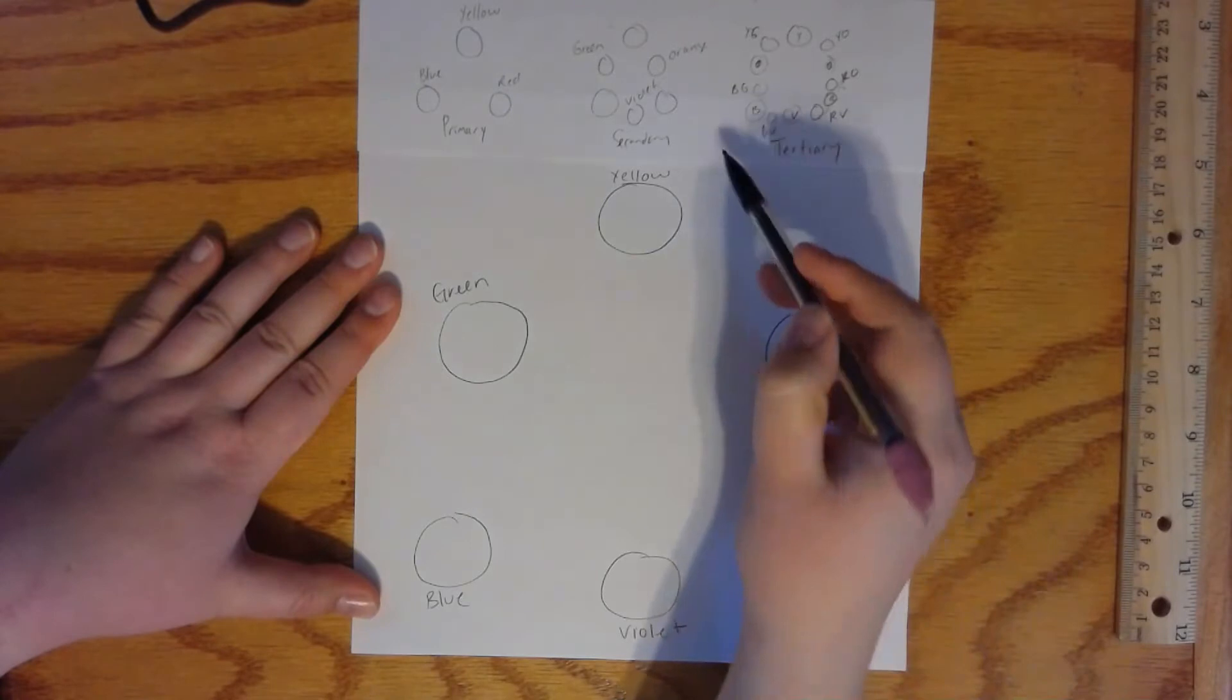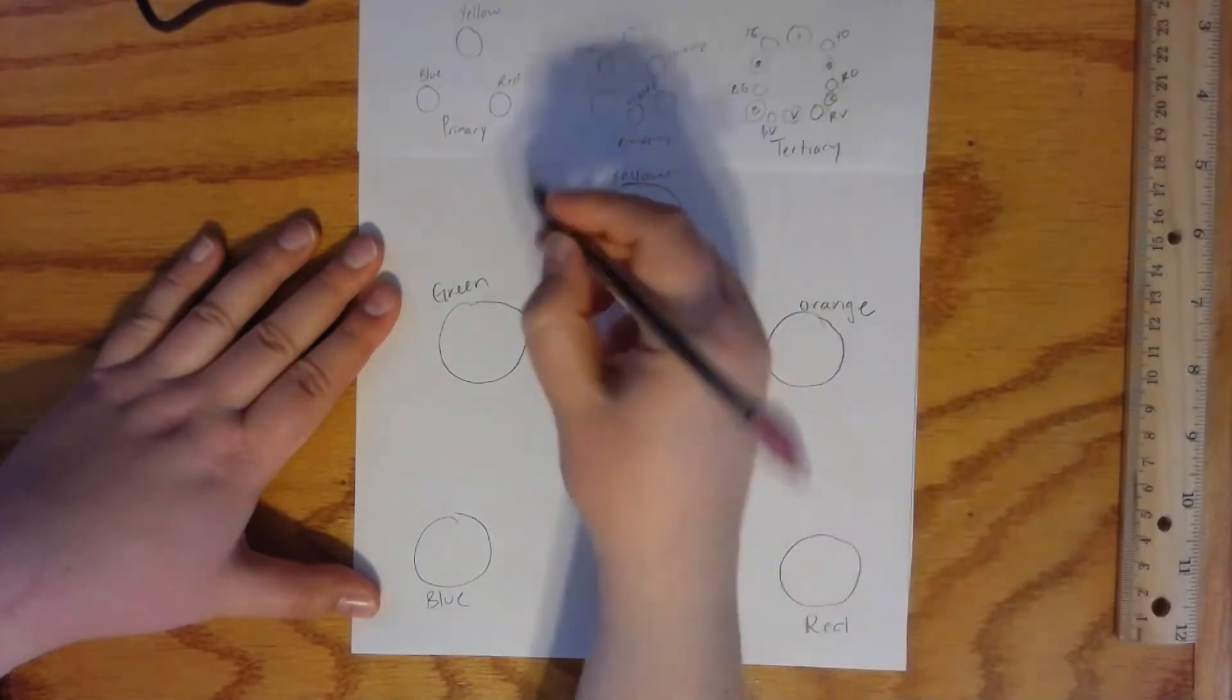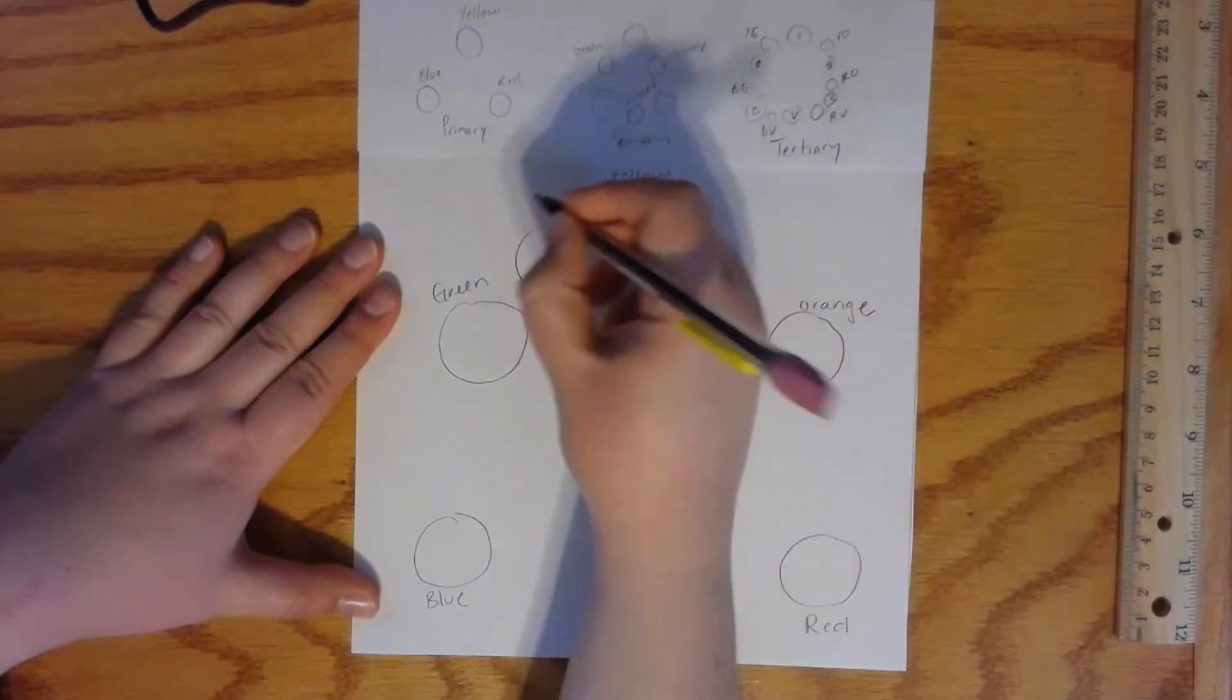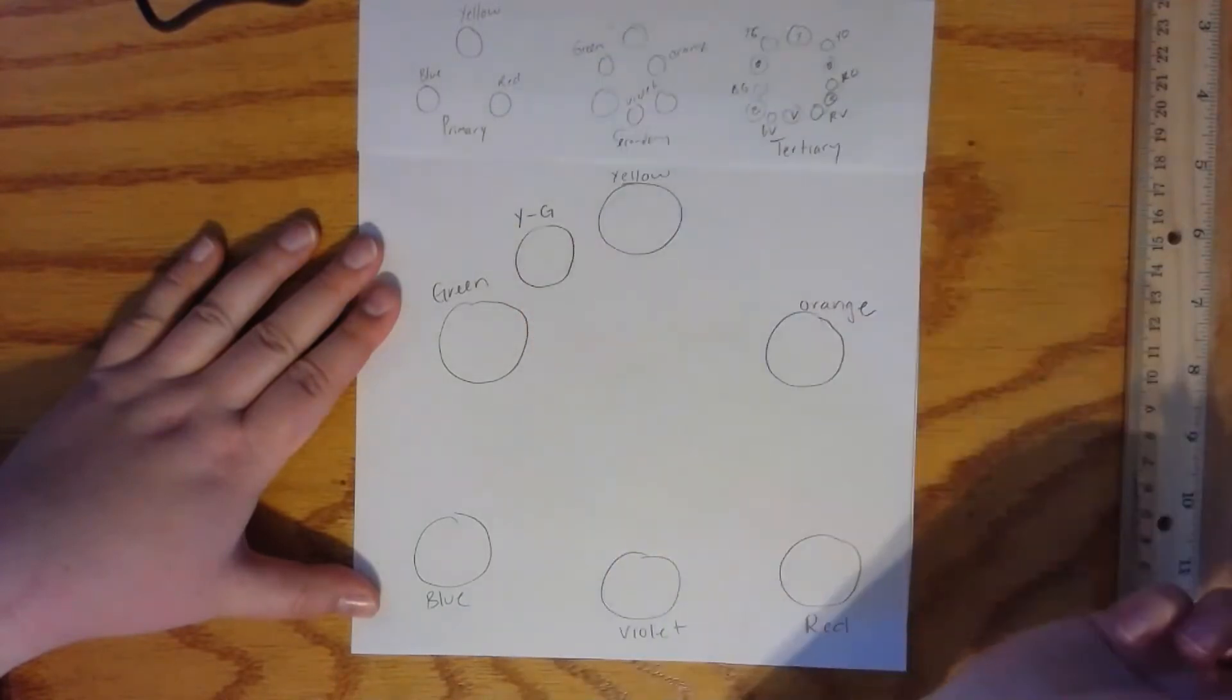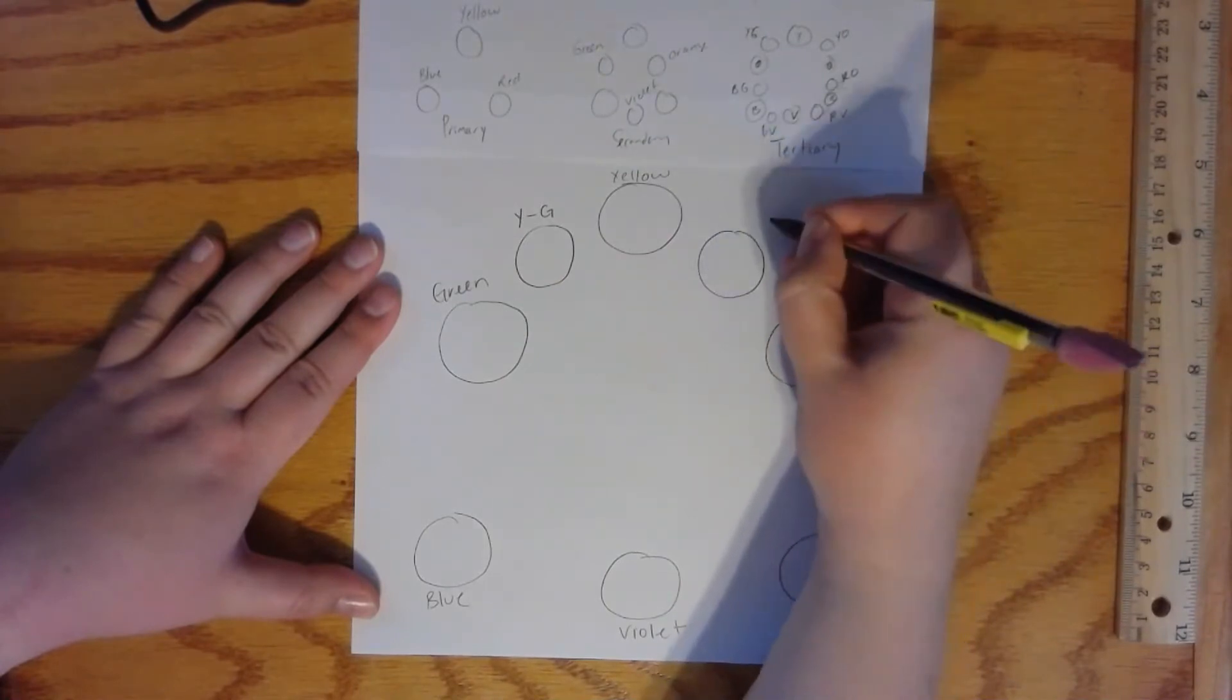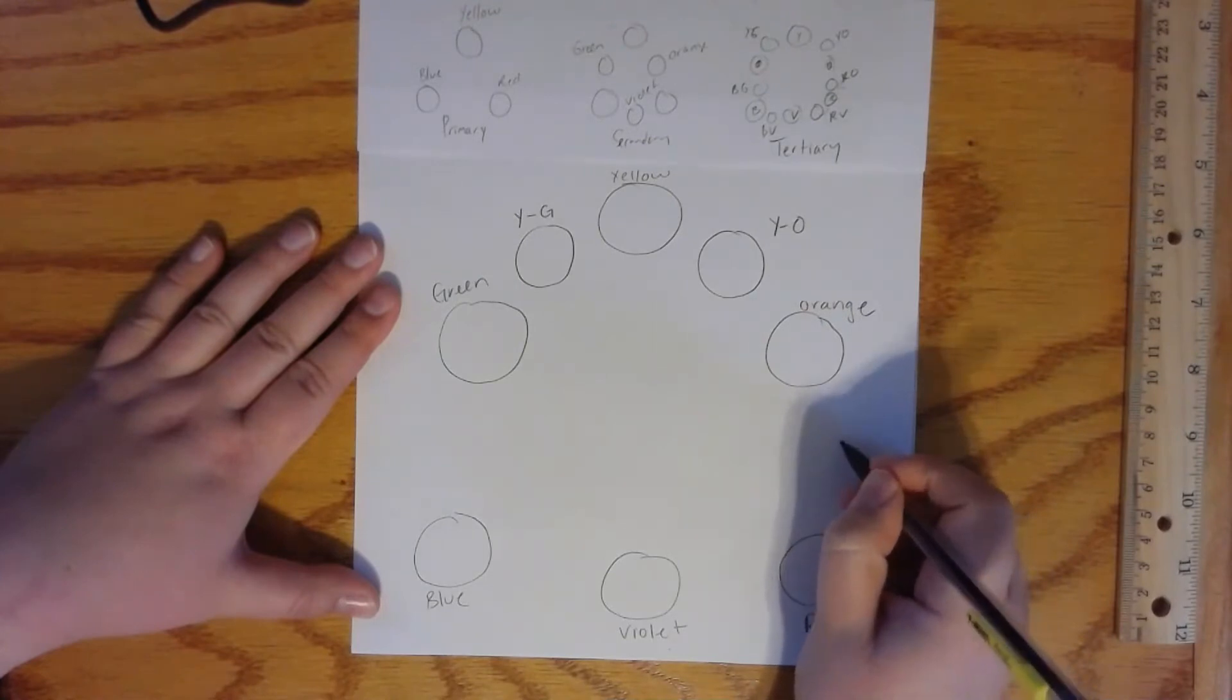Then we have to put our tertiaries in. Those are the ones that are the mix of a secondary and a primary. So then I put those in between. So yellow green, and I'm just going to put Y dash G. Then in between yellow and orange, yellow orange. Then between red and orange, red orange.